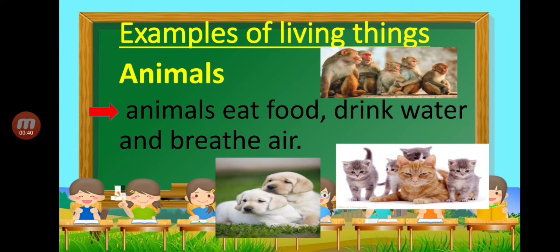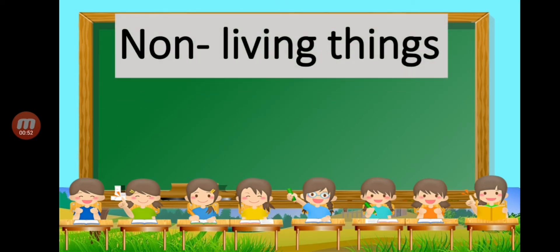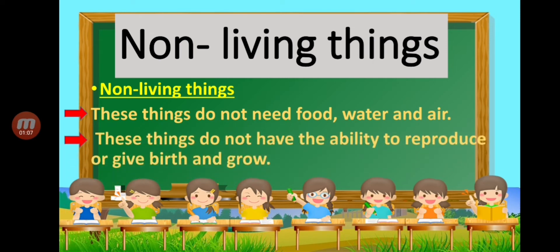All of them are animals, and animals eat food, drink water, and breathe air. So all of them are called living things. How about non-living things? These things do not need food, water, and air — they are the opposite of living things. They do not have the ability to reproduce, give birth, or grow.